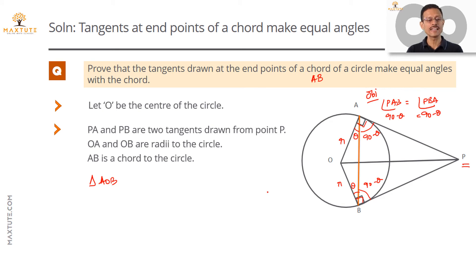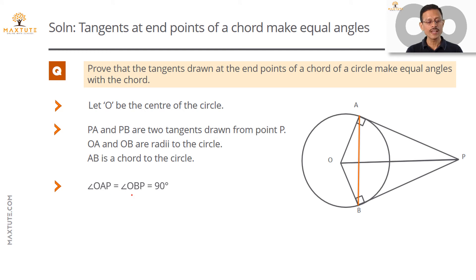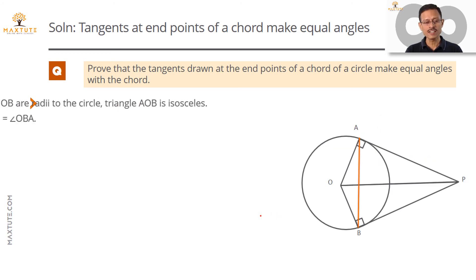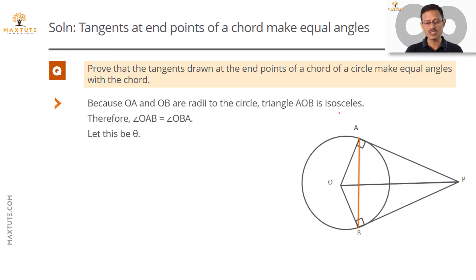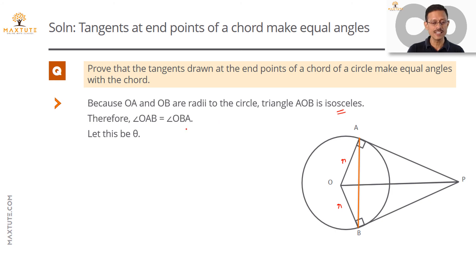Now let's write this out the way you should present it in the examination. First, state that angle OAP equals angle OBP equals 90 degrees, establishing the tangent-radius right angle. The chord is AB. Triangle AOB is isosceles because OA and OB are radii of the circle, so OA equals OB equals R.